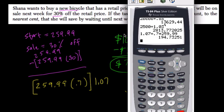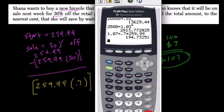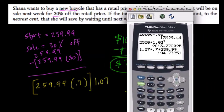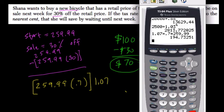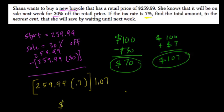Press Enter. And what happened? Well, that's our sale price: $194.73251. And they want this to the nearest cent, so $194.73.